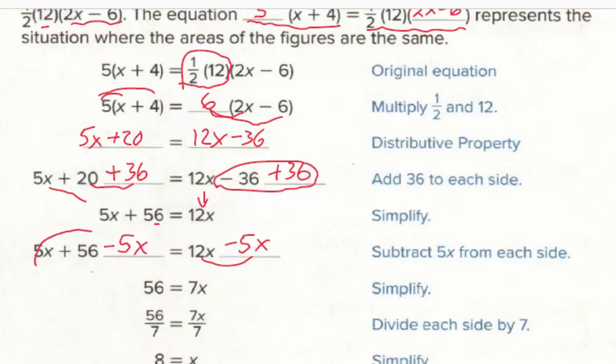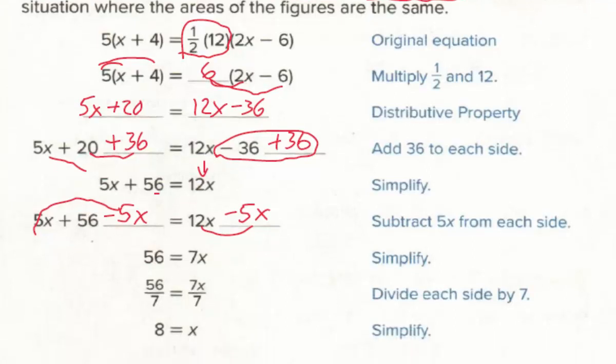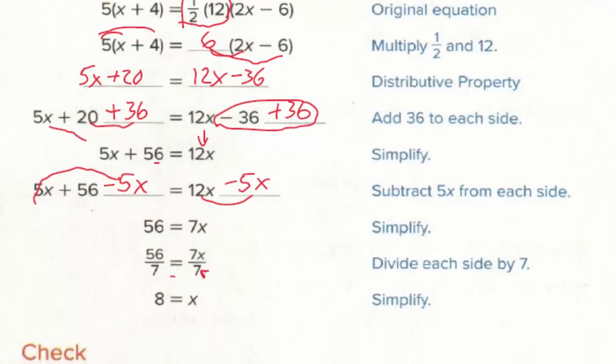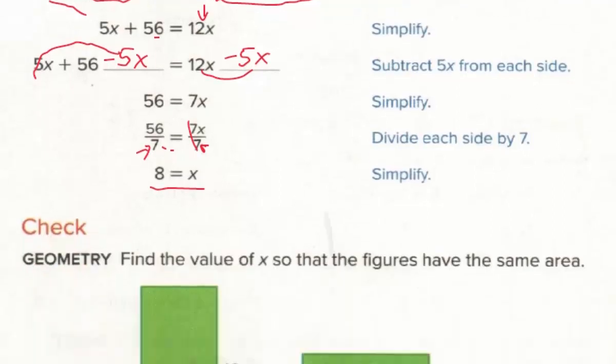5x − 5x zeros out on the left, leaving 56. Our last step is to divide both sides by 7. 7 ÷ 7 = 1, so x = 56 ÷ 7 = 8. If we substitute 8 in place of x in each figure, their areas would be exactly the same.